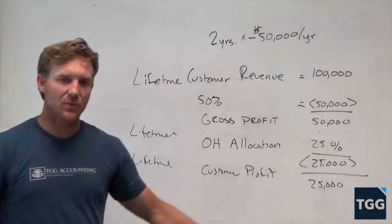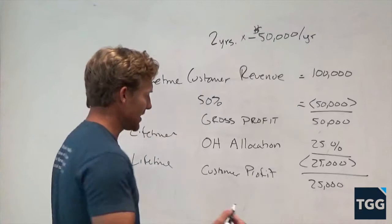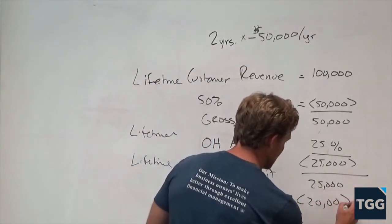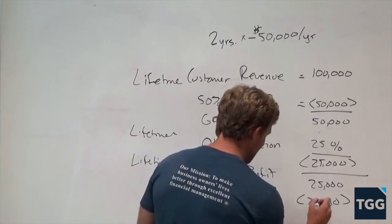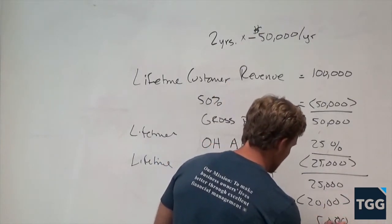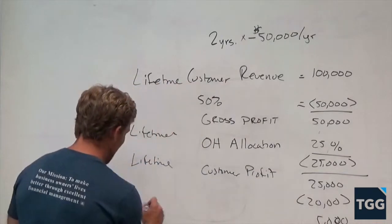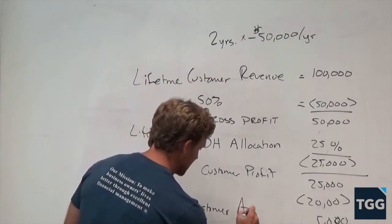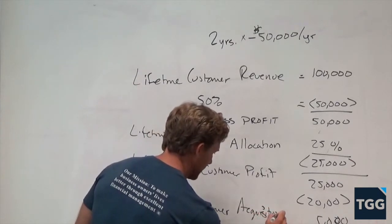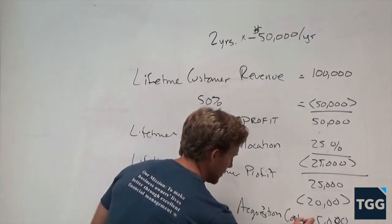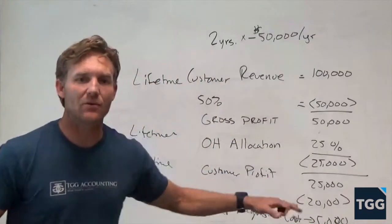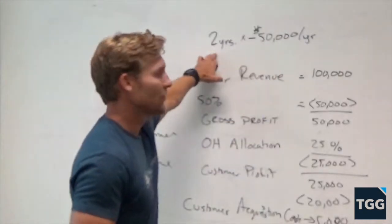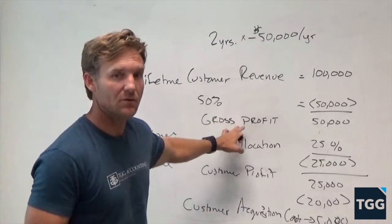Out of that $25,000, how much profit do we want to retain? In this case, we want to retain $20,000 of customer profit, which leaves us with $5,000 of customer acquisition costs. That means we can spend $5,000 to acquire a customer that's going to give us $50,000 of revenue for two years at a 50% gross profit.